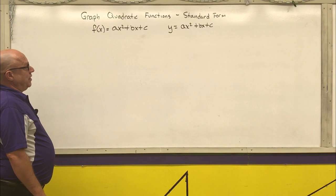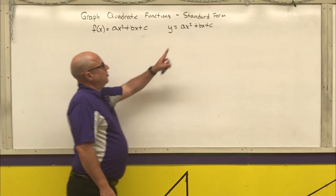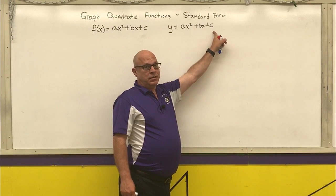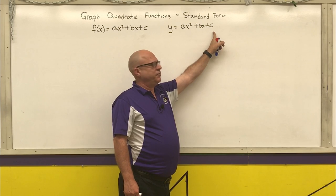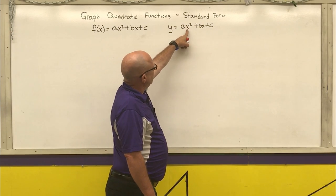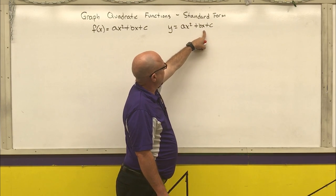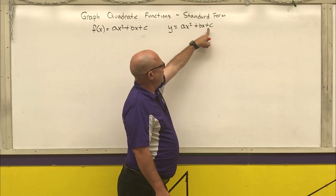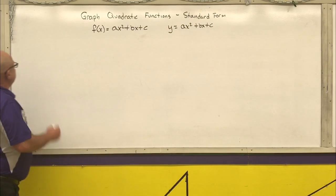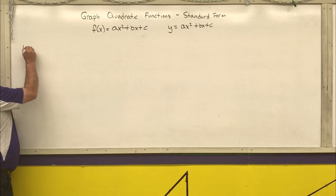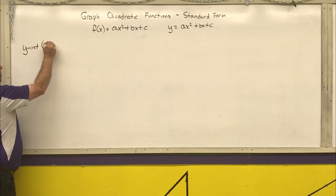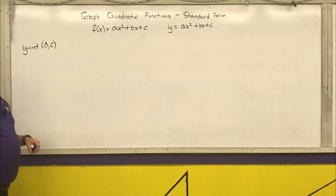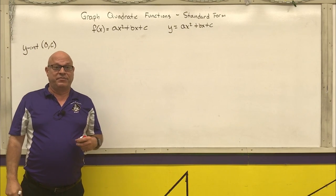Some key points about this. The c is always going to be the y-intercept, because the y-intercept is found when you put zero in for x. When you do that, the ax² and bx terms go away, and you're left with just c. So the y-intercept is always going to be at (0, c). That's one point that will help us graph these out.